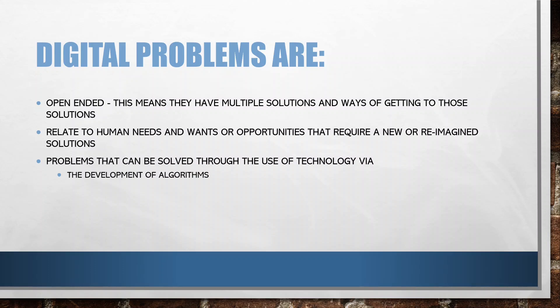Problems can be solved through the use of technology via different things called algorithms — and it's not a scary word. An algorithm is just a procedure, a series of steps to solve a problem, which we'll investigate later in the course. We are also going to do some programming. The languages we're going to use are JavaScript, and we're also going to use HTML and CSS. They're very powerful languages, they can do a lot of things, and they're not difficult to learn. You'll be able to learn the basics of coding in about two weeks. Coding and programming is a skill — like any other skill, the only way to get better is to practice it.